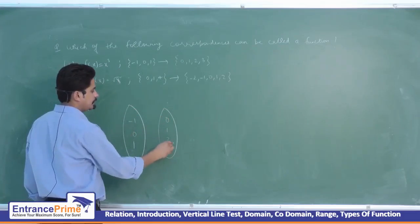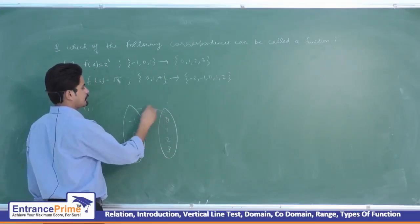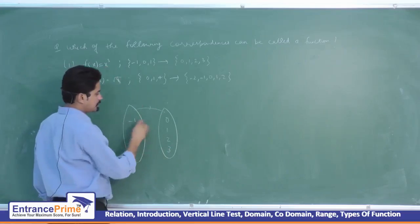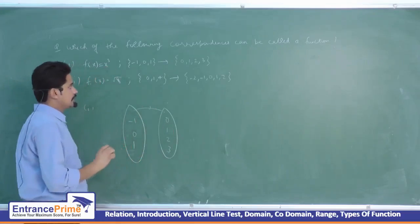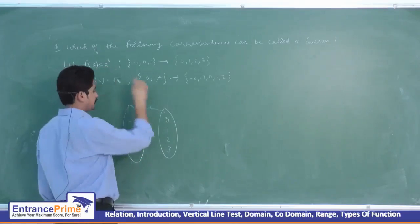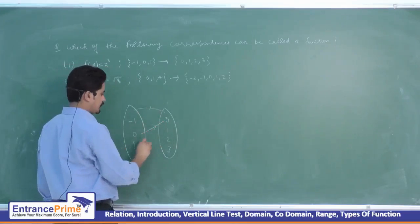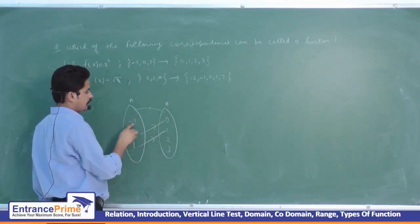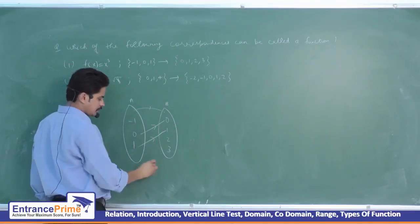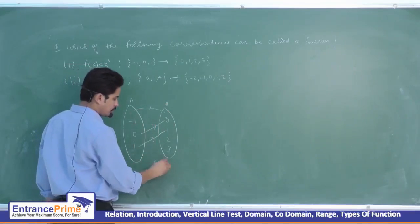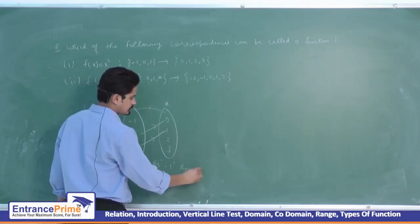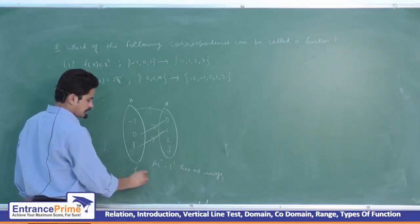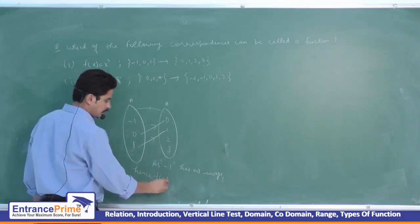There is set A and set B. If we put minus 1, we get minus 1 cubed, which is not present in set B. If we put 0, we get 0. If we put 1, we get 1. But there is no element in set B for x equal to minus 1. So, as minus 1 has no image, f(x) = x³ is not a function.